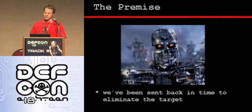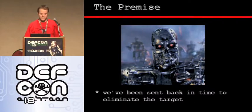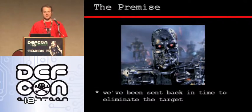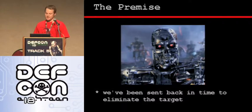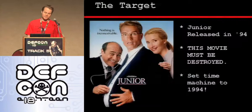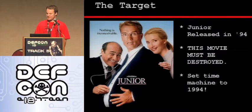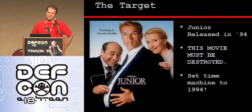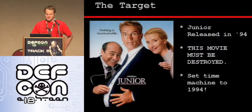The premise of this presentation is similar to the movie Terminator, where a machine is sent back in time to eliminate a target. We are going to be doing the same thing — traveling back in time to eliminate the target — except in our case, the target is not John Connor or Sarah Connor. It is an older systems platform, which is related to another of Arnold's escapades called Junior, released back in 1994. This movie is really a crime against humanity — an abomination of cinema — and we have to go back in time to destroy it.